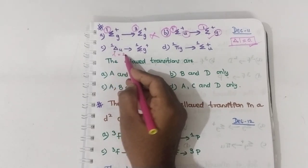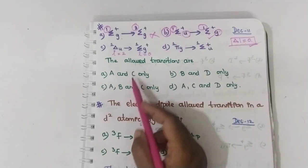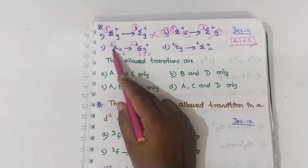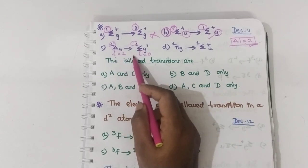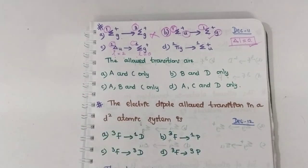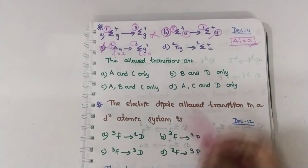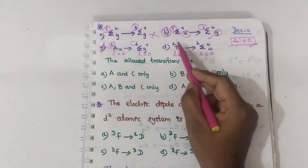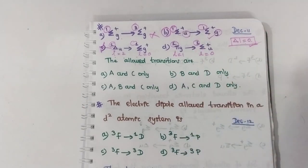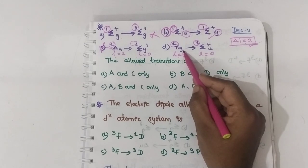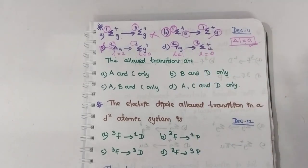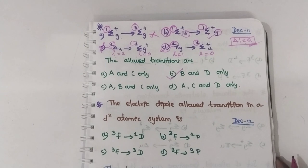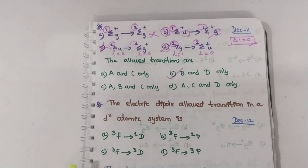In the next case, the L value is 2 here and 2 here, and 0 here. Spin selection is okay, but ΔL = 2, which violates the Laporte selection rule (ΔL should be ±1), so this is a forbidden transition. In another case, the L value is 1 here and 0 here. Spin multiplicity is the same, Laporte is satisfied, and parity — gerade to ungerade — is also correct. So B and D are the allowed transitions.